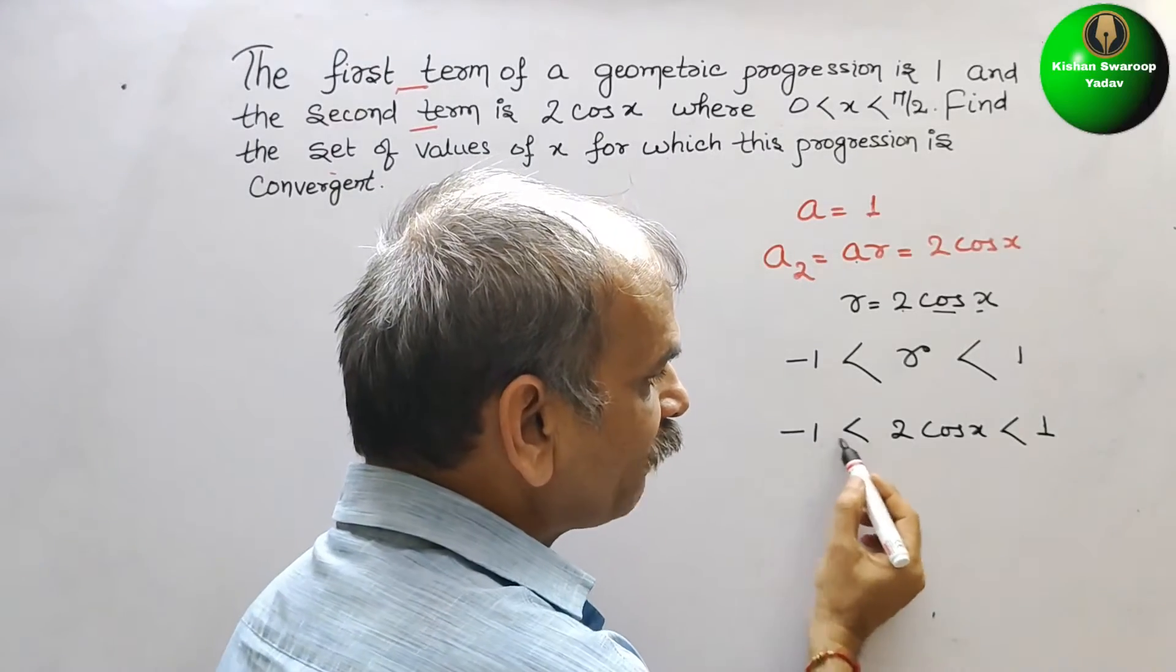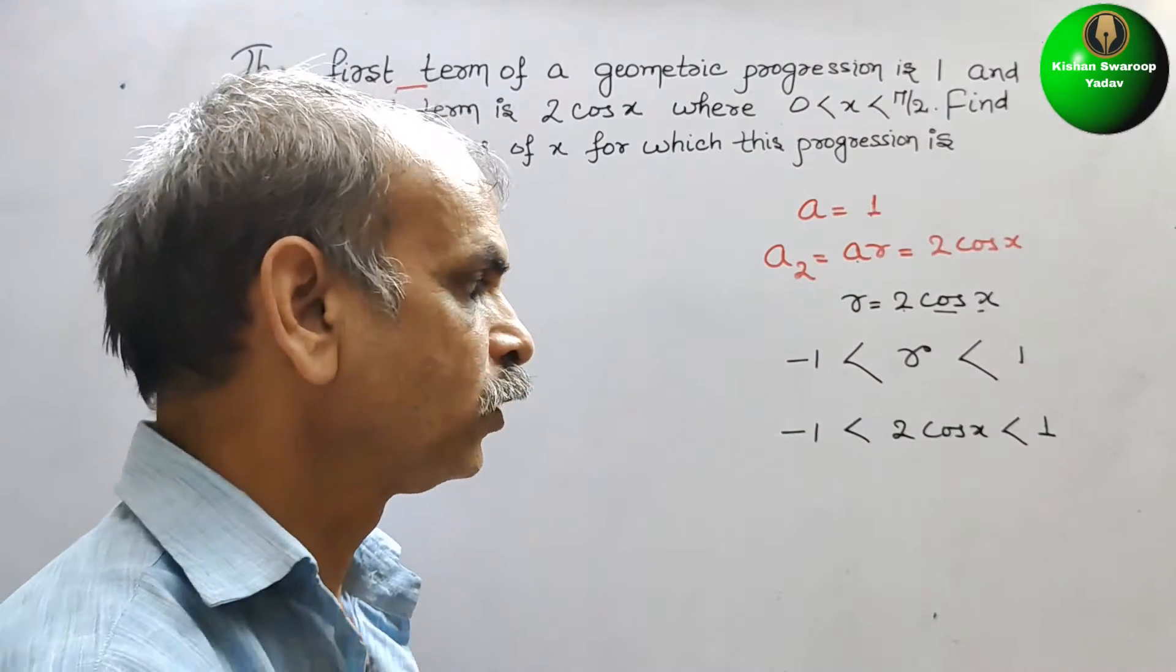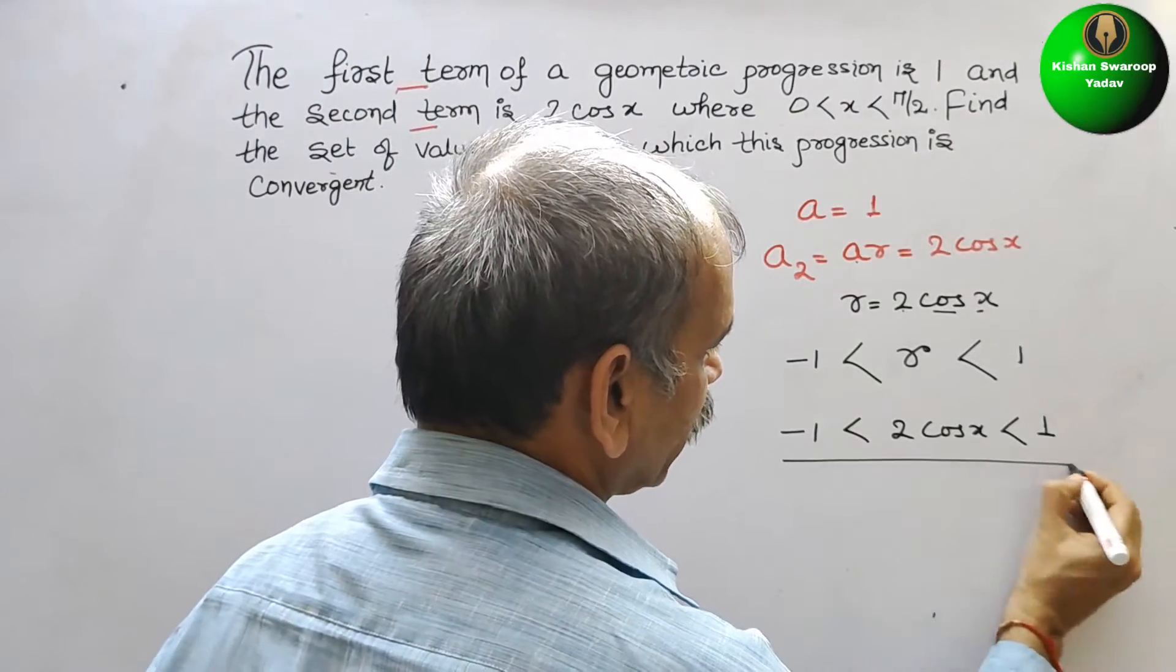So, now divide everything by 2. We will get cos x. So, now cos x is what? That means everything divided by 2.